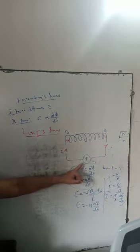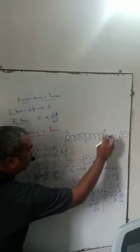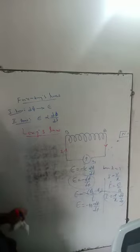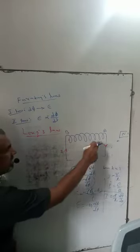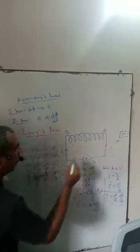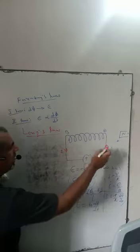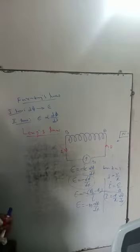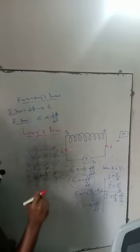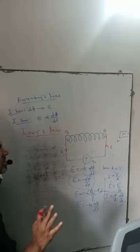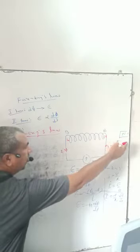This is a cylindrical coil connected with a sensitive galvanometer. There is a powerful magnet with a north pole. When the north pole moves faster towards the coil, due to increase in magnetic flux, the current and EMF induced in the coil flow in the anti-clockwise direction. So this coil behaves like a bar magnet: NA becomes the north pole and NB becomes the south pole, and NA opposes the motion of the magnetic north pole towards it.